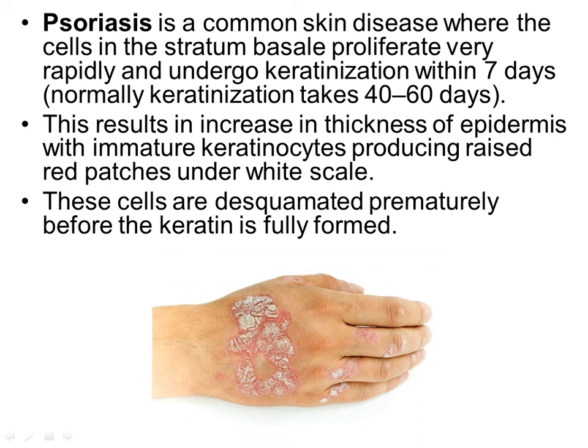Applied anatomy: Psoriasis is a common skin disease in which cells in the stratum basale proliferate very rapidly and undergo keratinization within 7 days, whereas normal keratinization takes 40 to 60 days. This rapid proliferation results in increased thickness of the epidermis with immature keratinocytes, producing raised red patches under white scales. The cells are desquamated prematurely before keratin is fully formed.